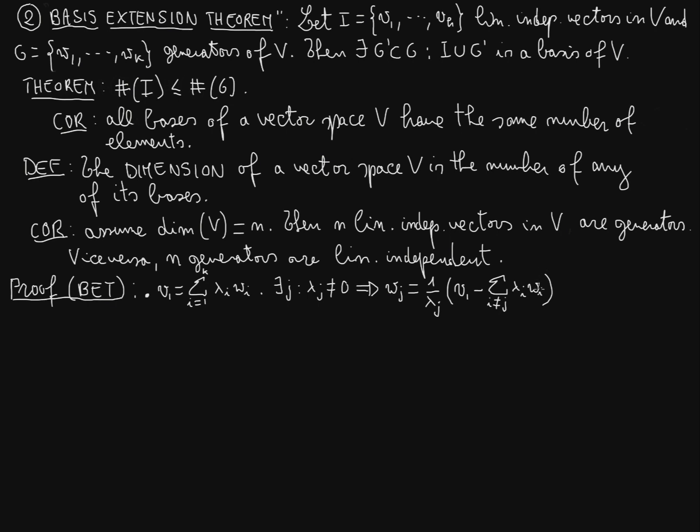So if we replace w_j in G with all these vectors, nothing will change the property of G being generators of V. Let G1 equal V1 and then W1, and so on.